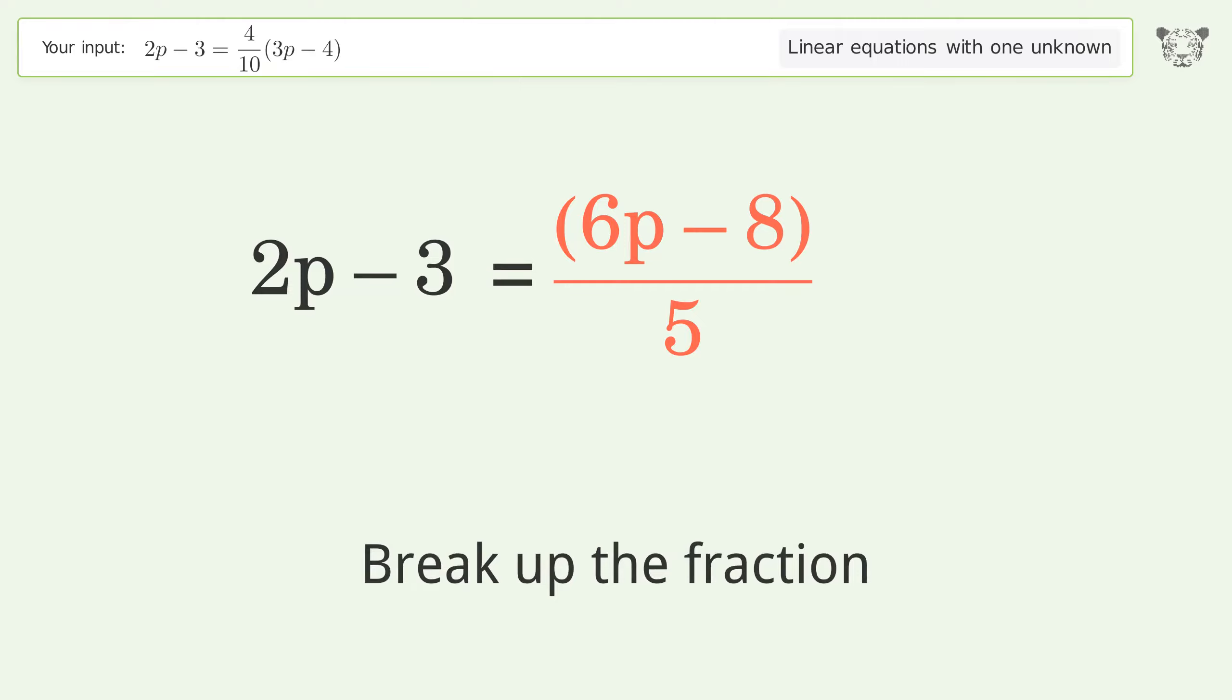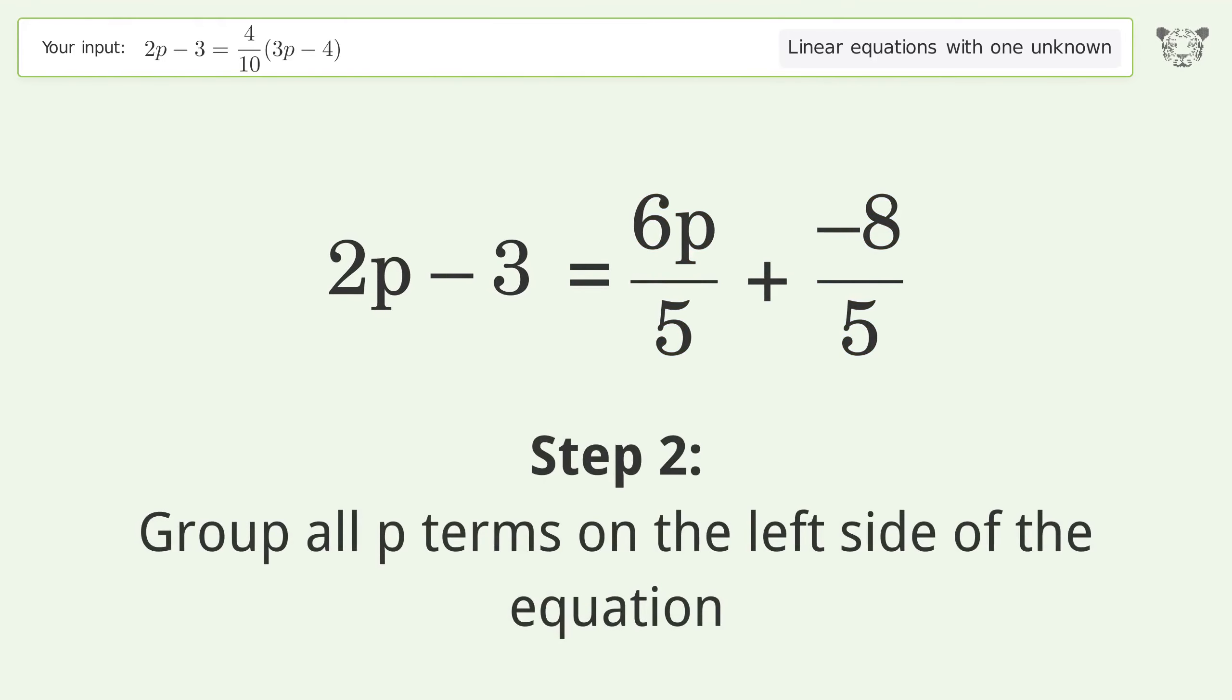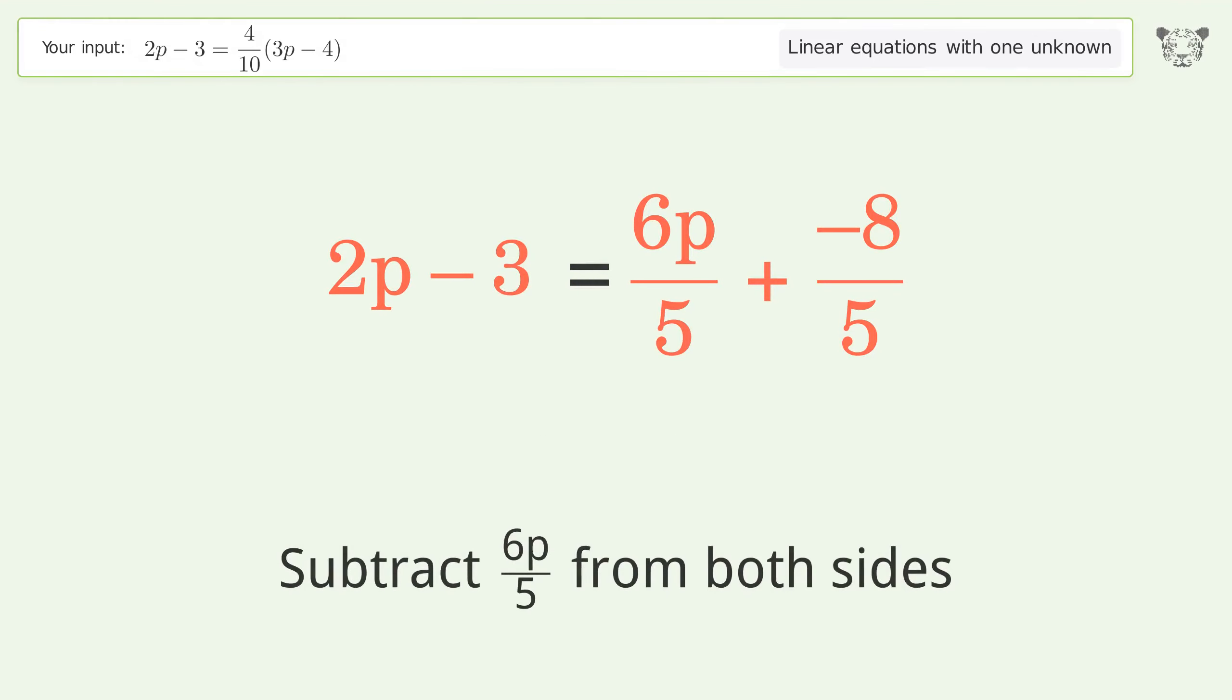Break up the fraction. Group all p terms on the left side of the equation. Subtract 6p over 5 from both sides.